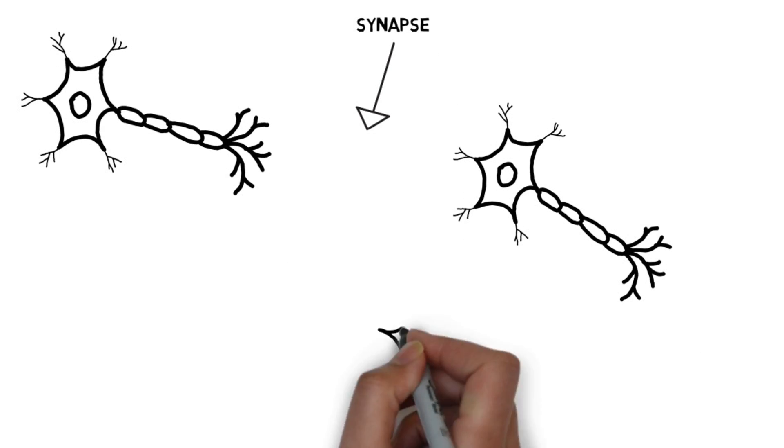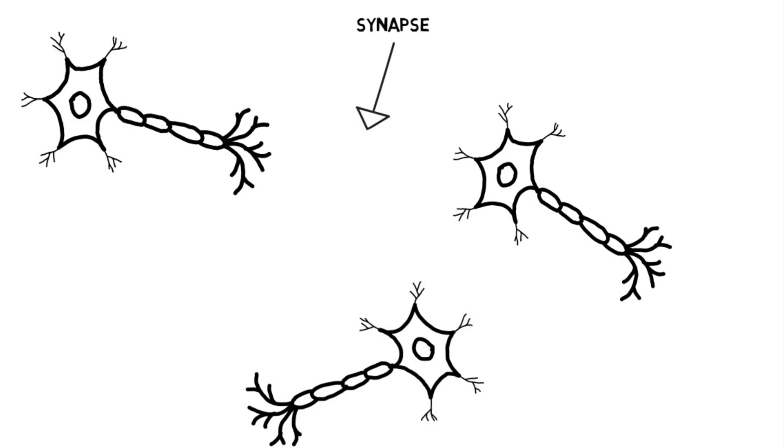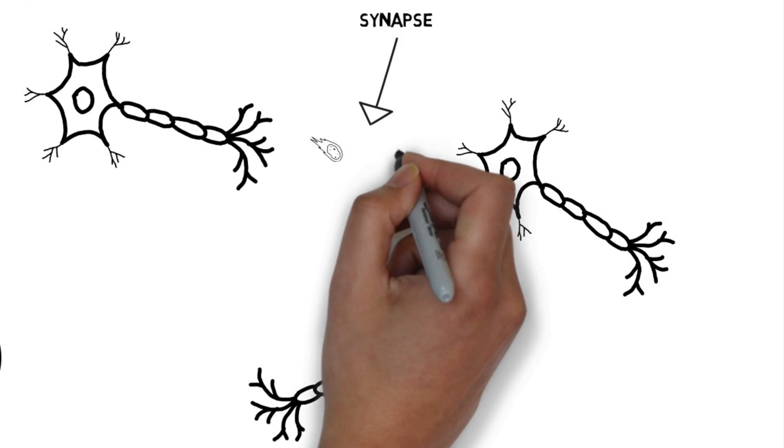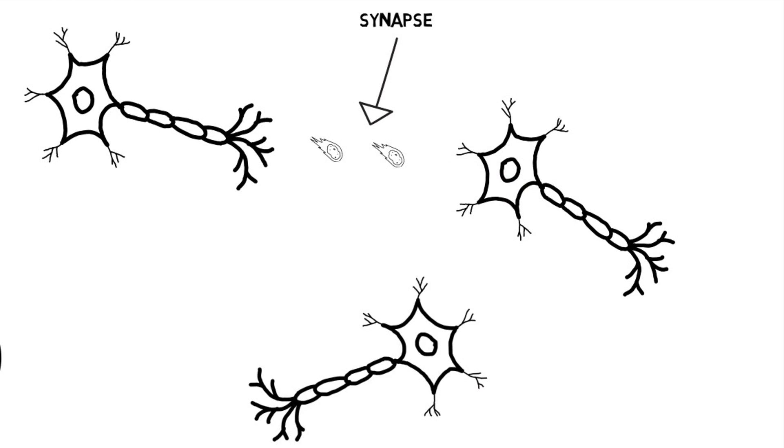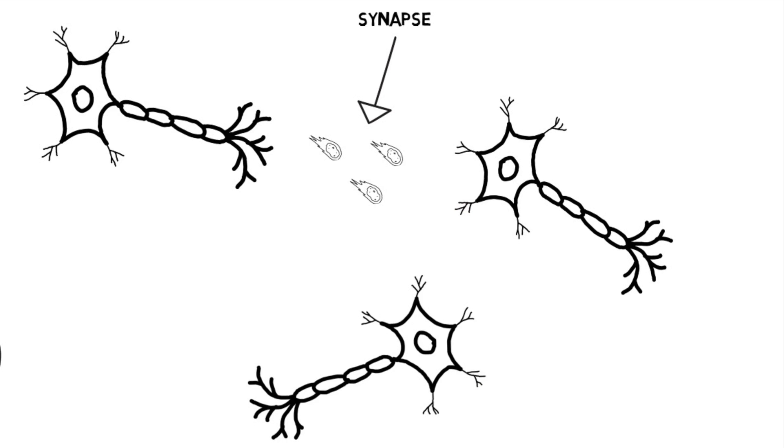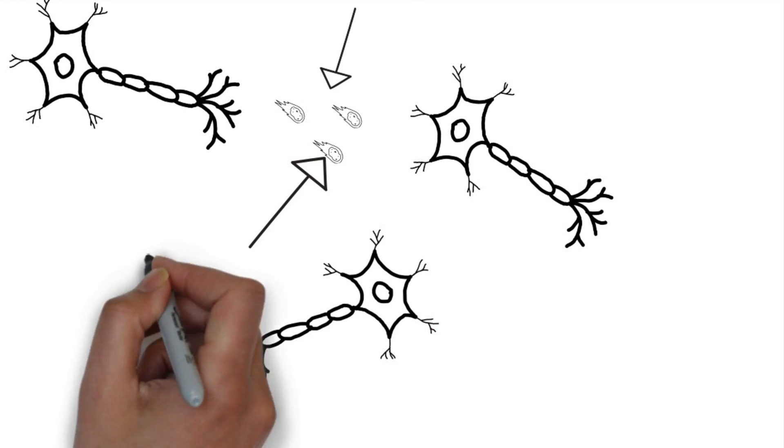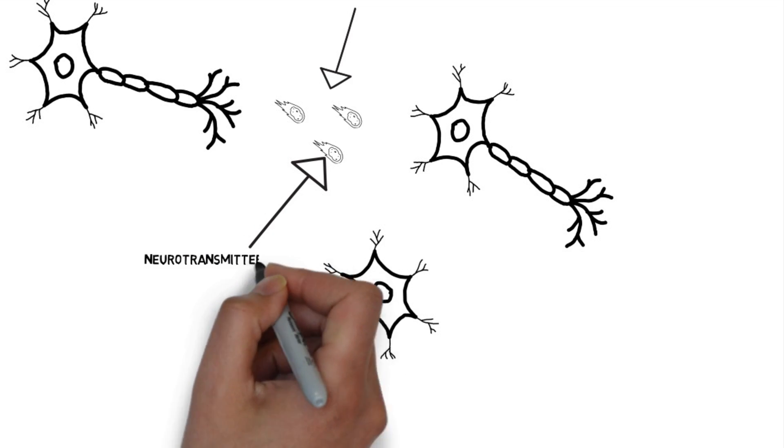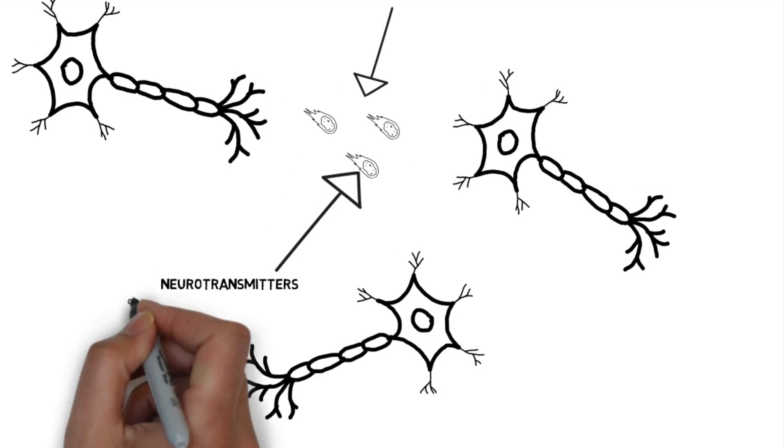So then how do our neurons actually communicate with each other across this gap? The answer is they throw chemicals back and forth at each other. And these chemicals are called neurotransmitters. And how important are these neurotransmitters? Well, I mean, if I was pressed, I would say they're everything.